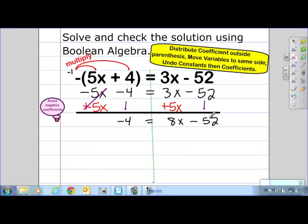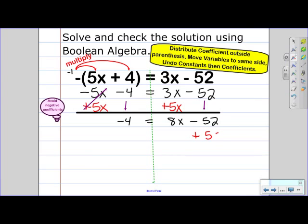Okay, now I need to undo my coefficient, which in this case would be the negative 52. So since it's negative or subtracting 52, I need to add 52 to both sides of my equal sign.